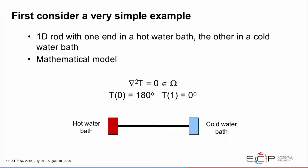For the computer scientists in the room, here's a quick introduction to the 1D heat equation. Think about a 1D rod — it has one end in a hot water bath and another end in a cold water bath. Over time, this end will be quite hot and this end quite cold — the temperatures of the hot and cold water baths respectively. In between, it'll be a linear ramp if it's a homogeneous material. You can model that using a diffusion equation, represented mathematically with a delta-squared type symbol where T is the temperature of the rod. We have boundary conditions: at the hot water bath end, T₀ might be 180 degrees; at T₁, the cold water bath end, maybe zero degrees. That is our mathematical model for this physics problem.